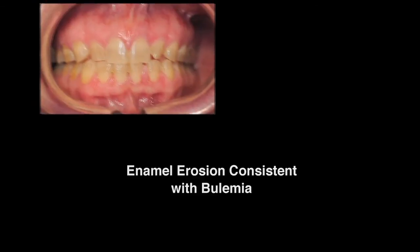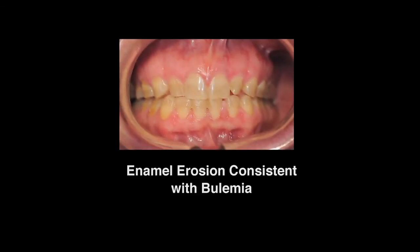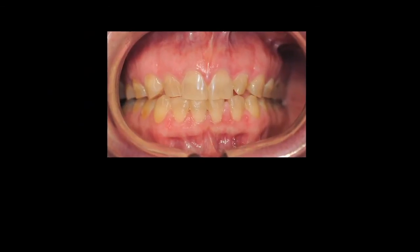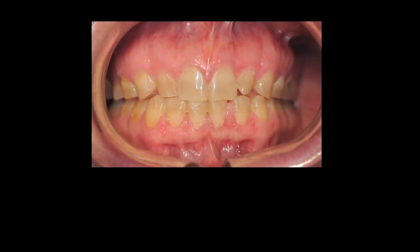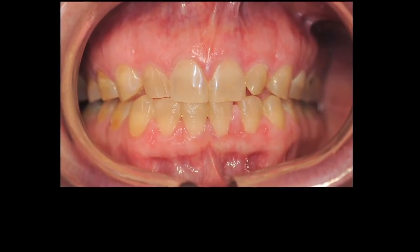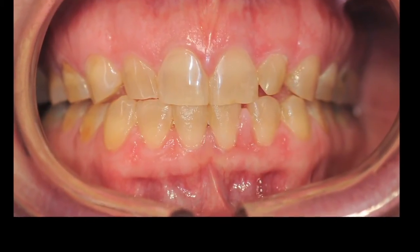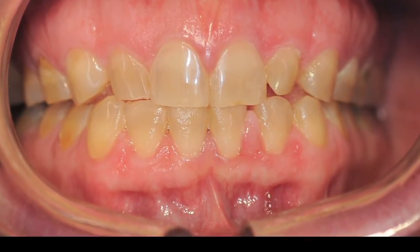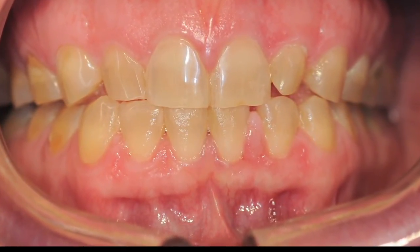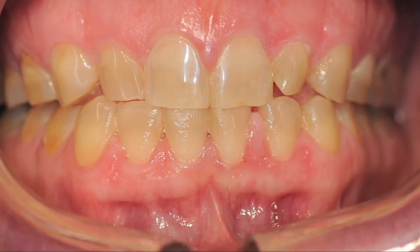Moving from the gingiva to the dentition, in a healthy adult you should see 32 erupted teeth. In addition, you can look for abnormalities on the tooth structure itself, including decay, restorations, or erosions. Erosions of this type can occur in patients who are bulimic, have a high acid content in their diet, or have GI reflux.